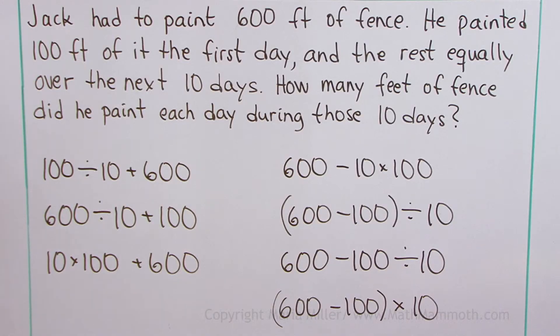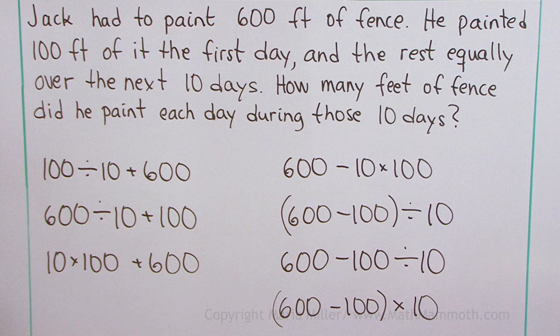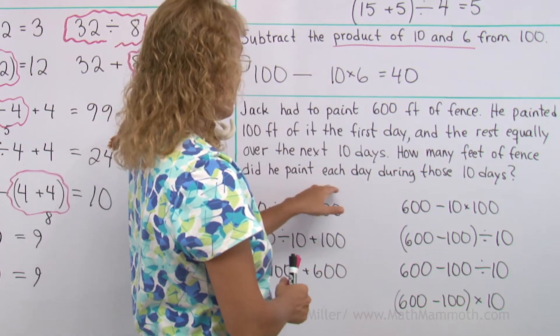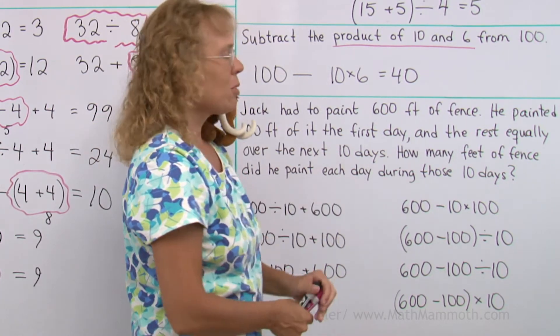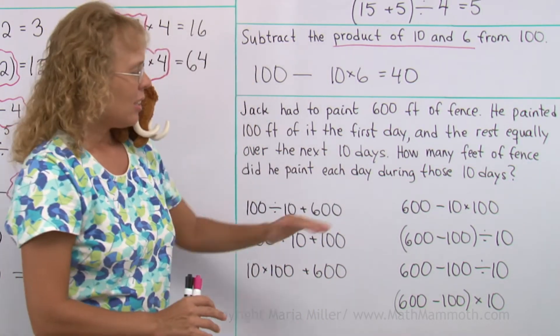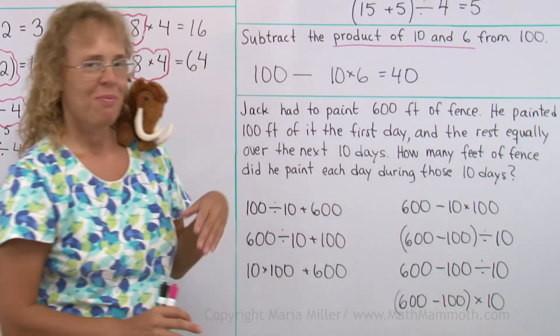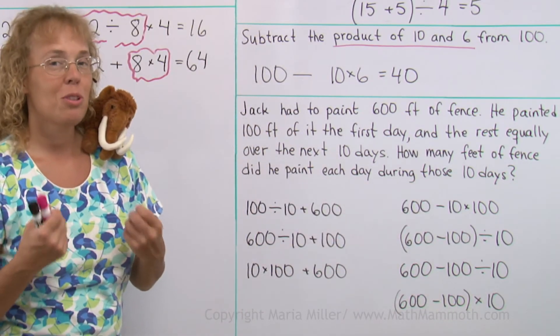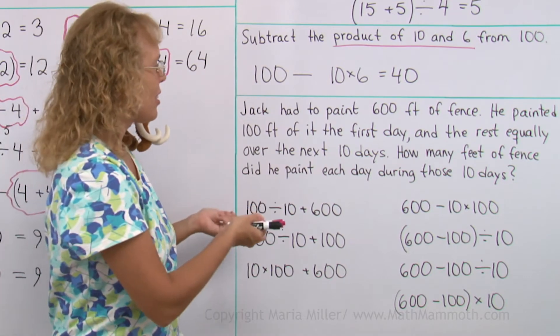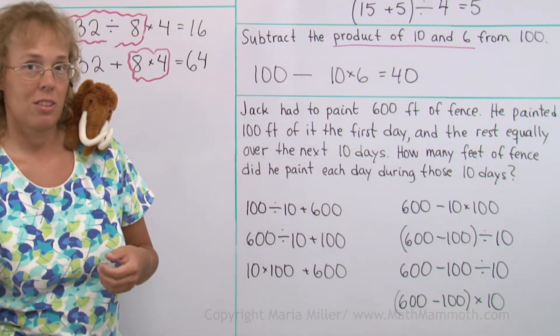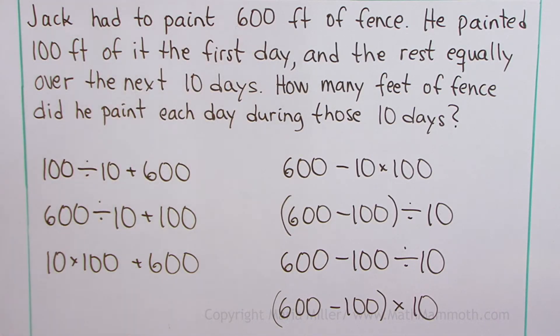Let's read. Jack had to paint 600 feet of fence. He painted 100 feet of it the first day, and the rest equally over the next 10 days. How many feet of fence did he paint each day during those 10 days? Don't look at this yet. Start thinking, what would you do? What would you calculate if you read this? What would you calculate first? Jack had to paint 600 feet of fence and he painted 100 feet the first day.